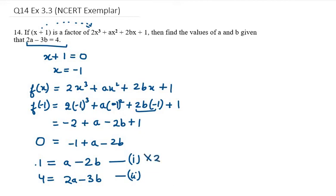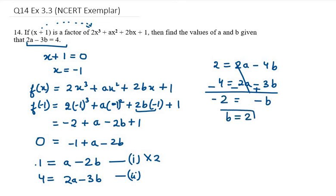So my equation number 1 becomes 2 = 2a - 4b, and the second equation is 4 = 2a - 3b. Now we need to change the signs. 2a and 2a gets cancelled out. -4b + 3b will be -b, and 2 - 4 will be -2. So b equals 2.